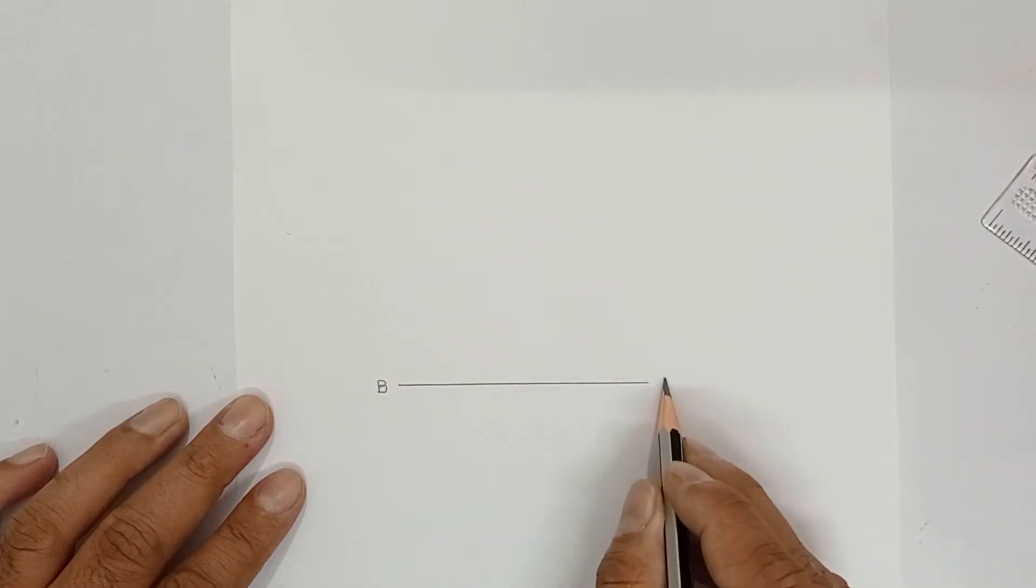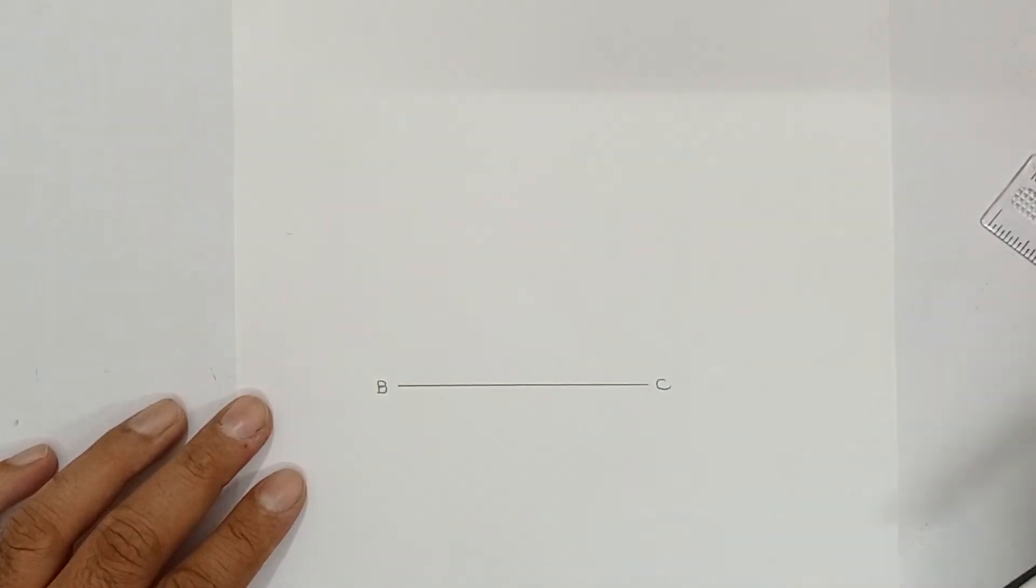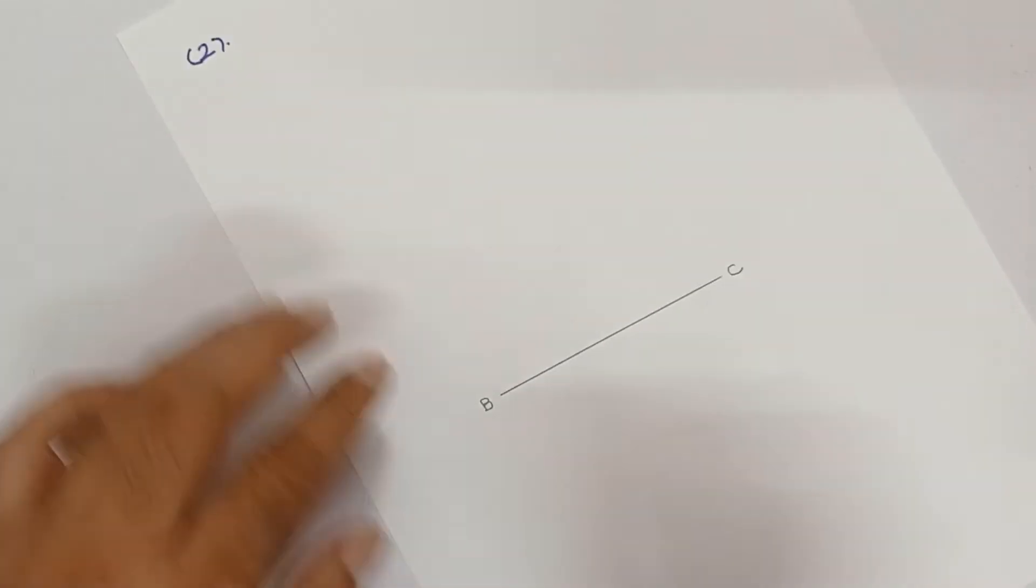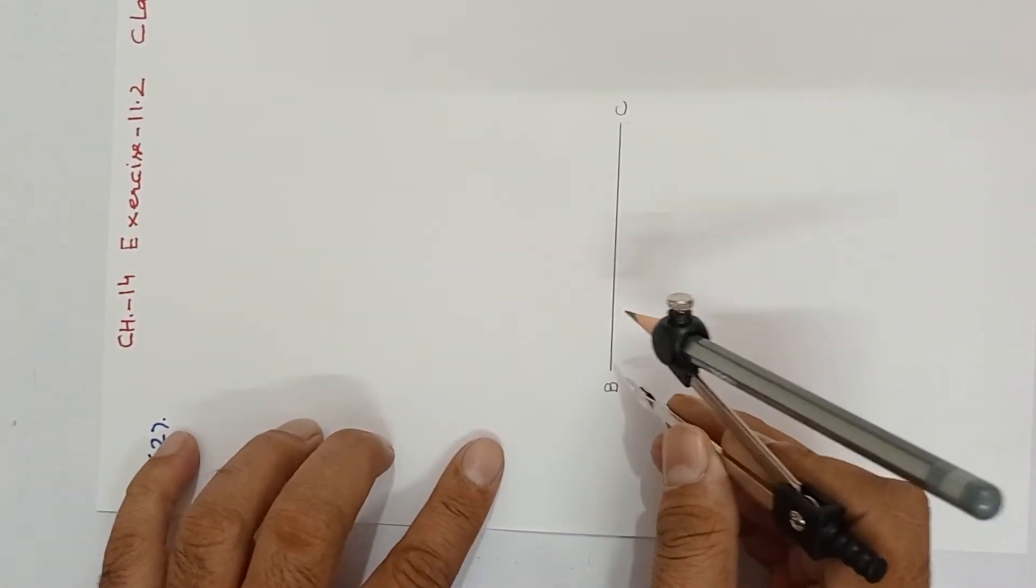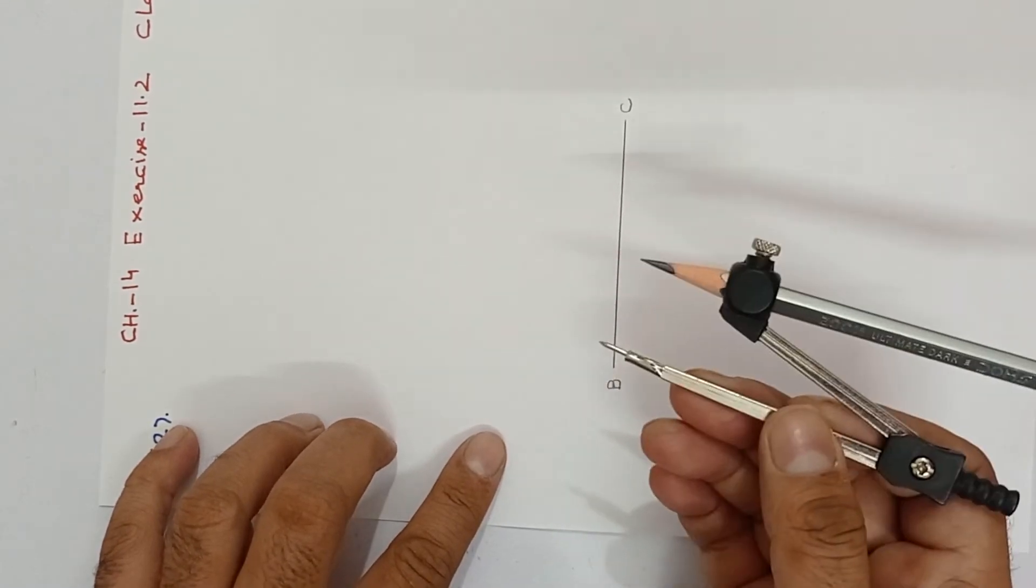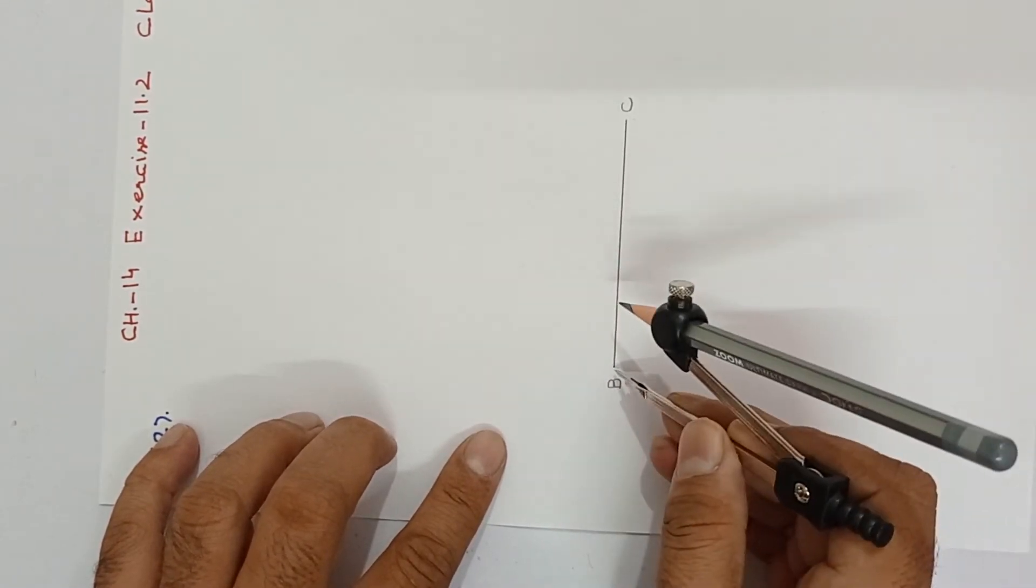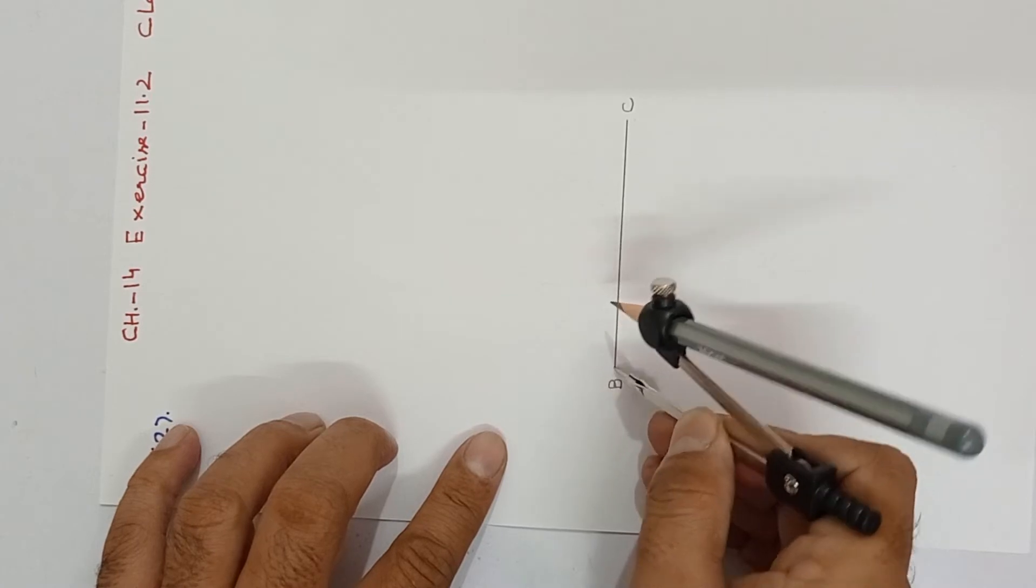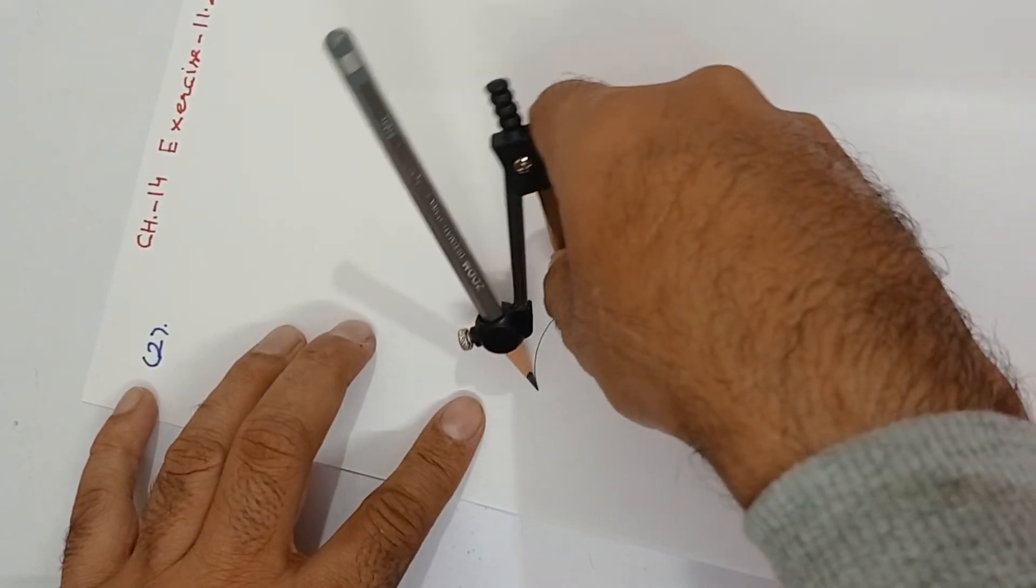And it is 8 cm. Angle B is of 45 degree. So, 45 will be made with compass. Before 45, which angle will be made? 90. Open the compass by estimate. Keep it here and take an arc like this.